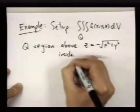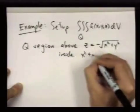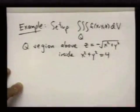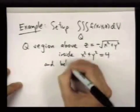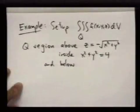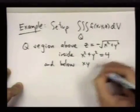Inside the cylinder x² + y² = 4 and below the xy plane.